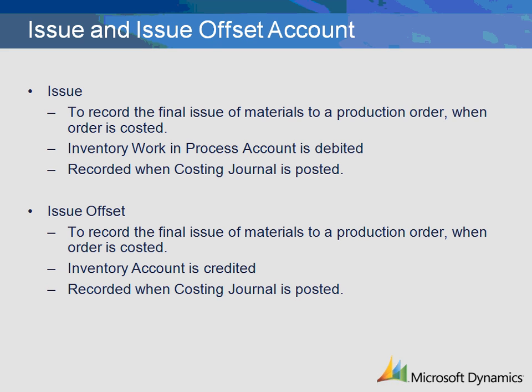The Issue Offset Transaction is the setup related to the recording of completed and costed production orders or quantities. The transaction, which is the offset to the issue transaction, is created when the final calculation of the production order is completed through the costing journal and is posted to the production order. The ledger account for this transaction is the work in process account and is debited at the time of journal posting.